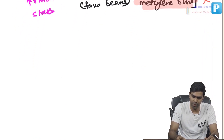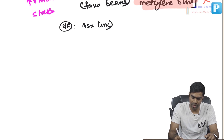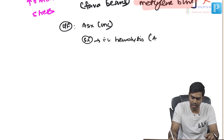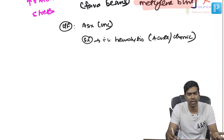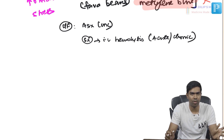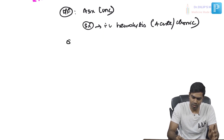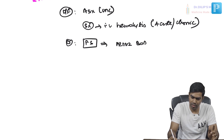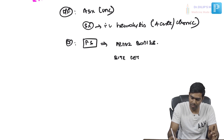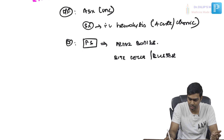Clinically, most G6PD-deficient patients are asymptomatic. Symptomatic patients present with features of intravascular hemolysis, either acutely due to specific triggers or chronically without triggers. The hemolysis is typically non-spherocytic, as intravascular hemolysis does not produce spherocytes. On peripheral smear, you will see Heinz bodies and classic bite cells or blister cells.